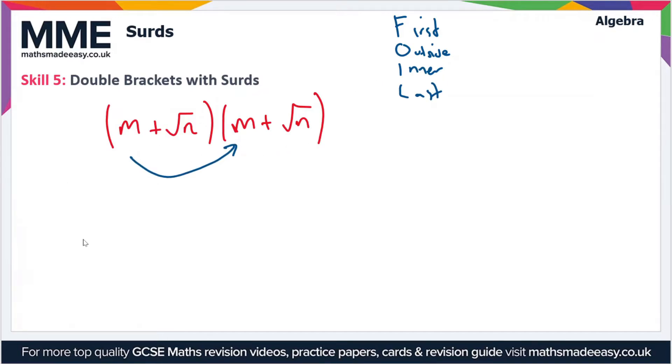That's m and √n, which gives us m√n. Then we multiply the inner terms together, that's √n and m, so we get m√n again. Finally, we multiply the last terms together, that's √n times √n, which equals n. So we're left with this expression: m² + m√n + m√n + n.